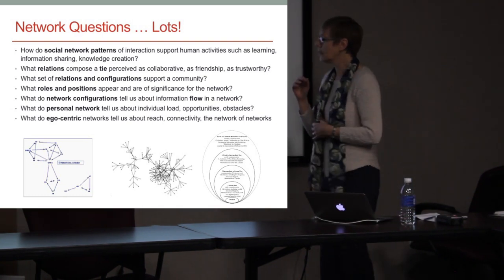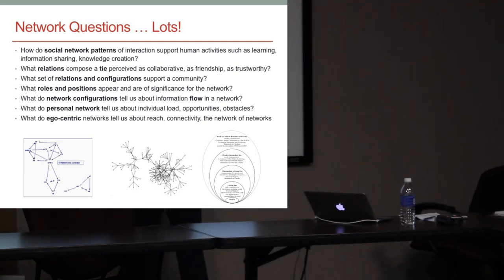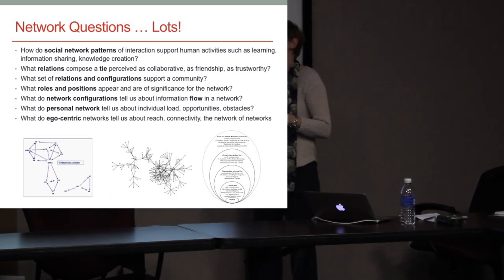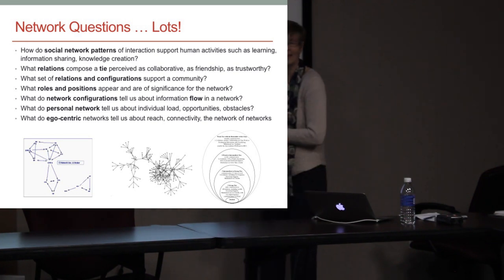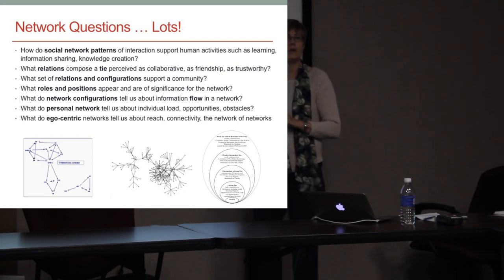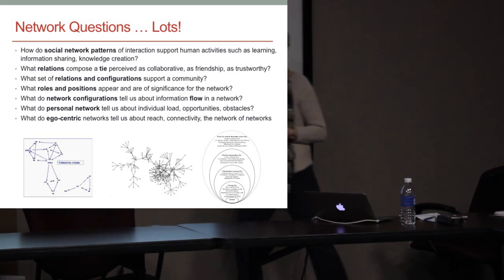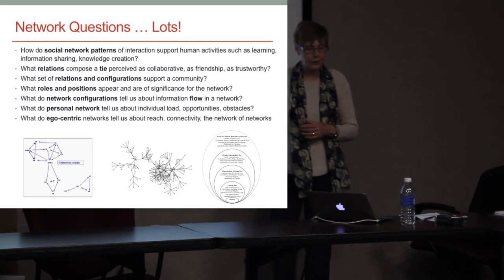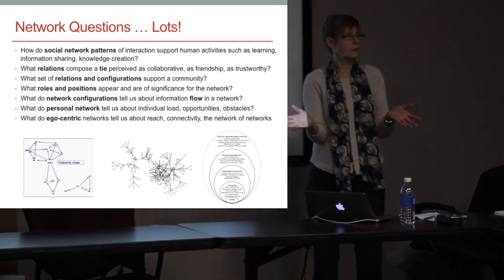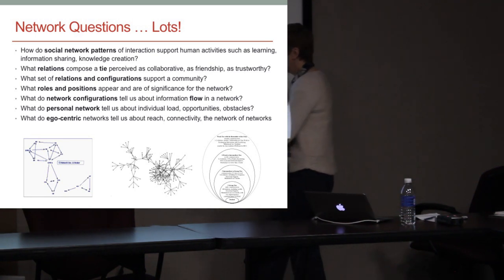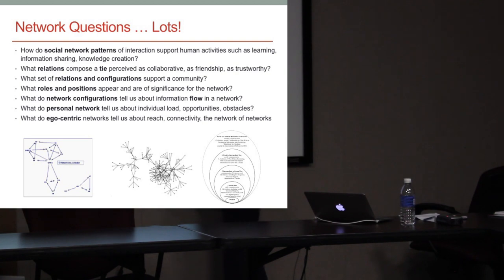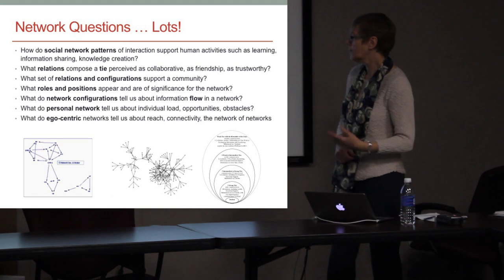What do network configurations tell us about information flow? This one told us information is not going to flow all the way through the network. Here's a picture from STEM science teachers in a train-the-trainers project — we see the high schools on one side and the elementary schools on the other, with only one connector between them. We want to find that person and make sure they don't disappear. Martin Delaat takes a picture like this, shows it to people, and says 'hey, what's going on here?' — using it as a feedback device so that people will go and find other connections.